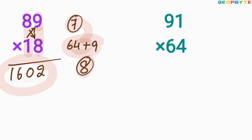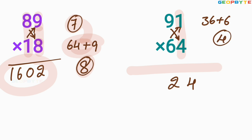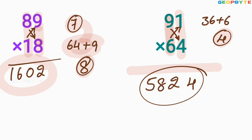I hope all of you clearly understood. Similarly, 91 multiplied by 64. First, multiply 1 and 4: 1 into 4 is 4. Then cross multiplication: 9 into 4 is 36, plus 6 into 1 is 6 — equals 42. Write 2 here, 4 balance. Then multiply 9 and 6: 9 multiplied by 6 is 54, plus 4 balance is 58. So 5,824 is the value of 91 multiplied by 64.